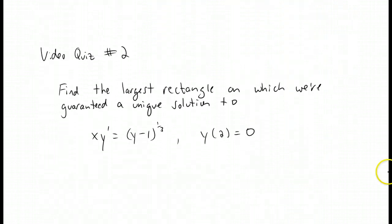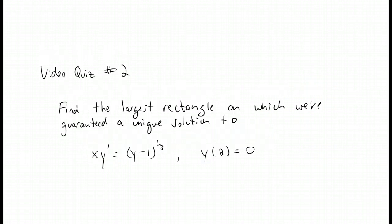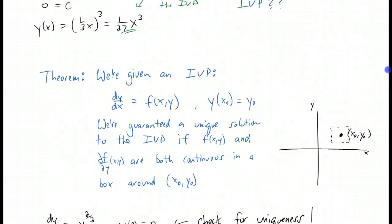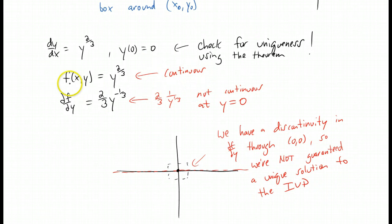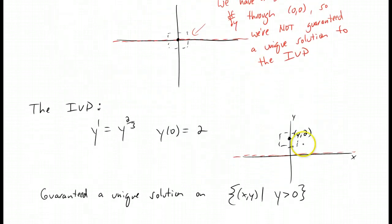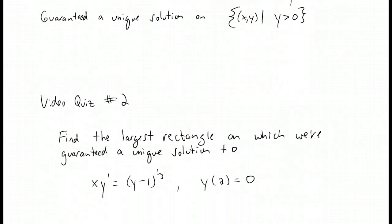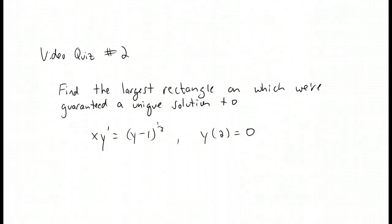Here's a quiz: let's find the largest rectangle on which we're guaranteed a unique solution to that differential equation. The steps are always the same: make sure you have the differential equation in the right form, find discontinuities in f of x, y and its partial derivative with respect to y, draw a picture with your initial condition and all discontinuities, and draw the largest box possible around your initial condition that contains no discontinuities. Good luck, and I'll see you in class.